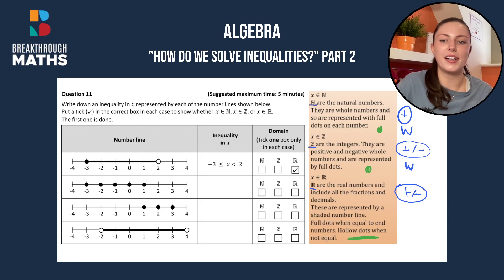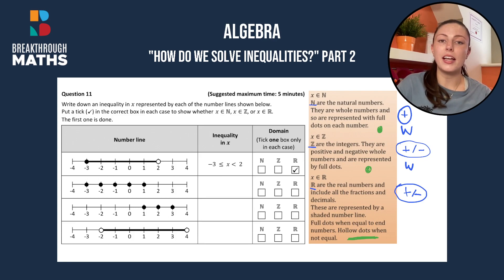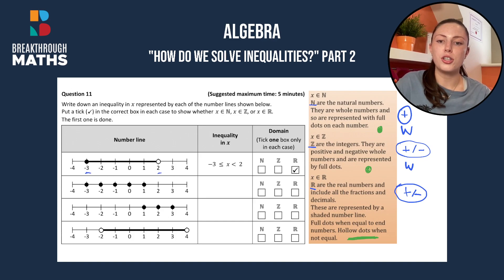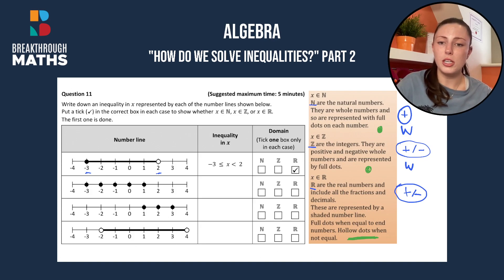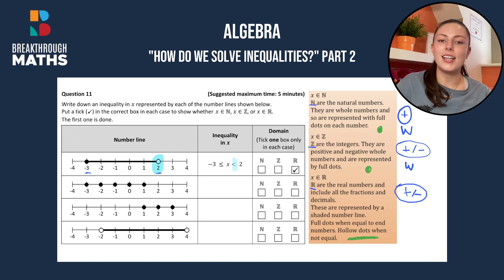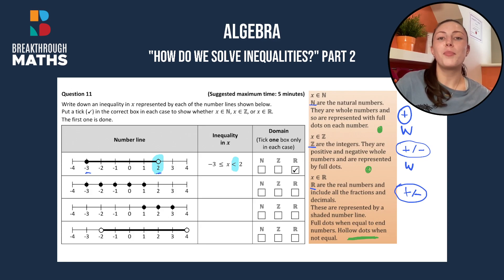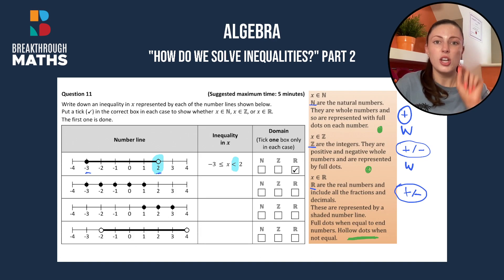Starting off with the first one, we can see the solid line, which tells us immediately that it's a real number — hence we take R. When we write out the inequality, we always write x in the middle, with minus 3 on one end and plus 2 at the top. We can see there's an open circle on 2, which means x is less than 2 — it includes everything up to 2 but not including 2. For example, 1.999 is included, but not 2, hence the open circle.